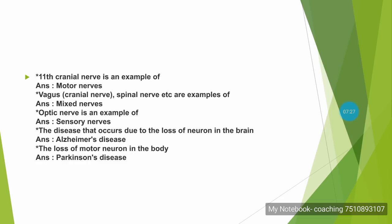The disease that occurs due to the loss of neurons in the brain is Alzheimer's disease. The disease caused by the loss of motor neurons in the body is Parkinson's disease.